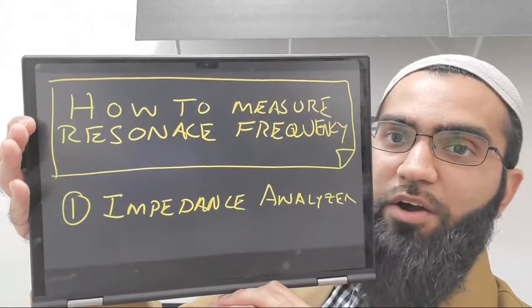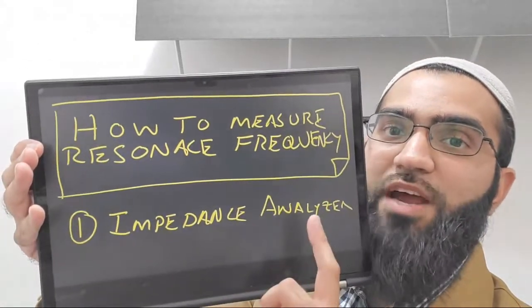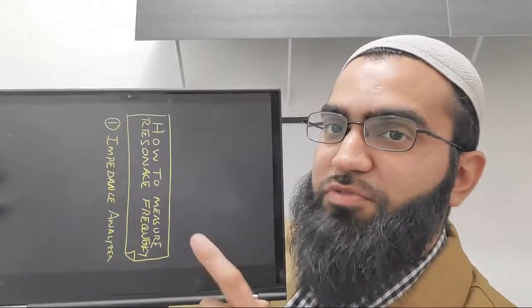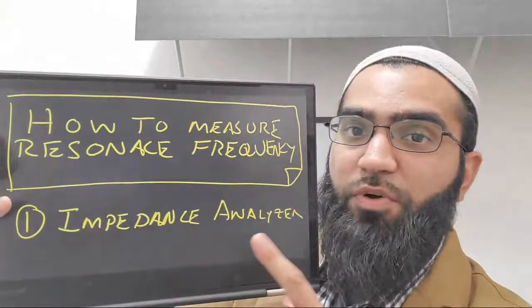Let's get into it. How do you measure the resonance frequency using an impedance analyzer? You look for the minimum point, or more precisely, you look for the maximum conductance - the real admittance. But for most people it's just enough to know that the minimum impedance frequency is your resonance.